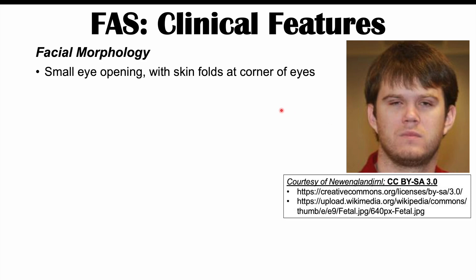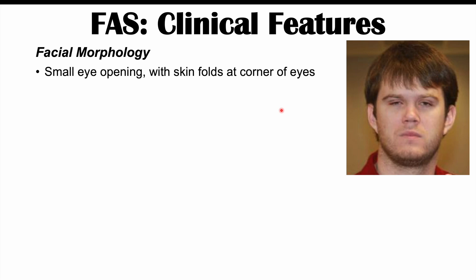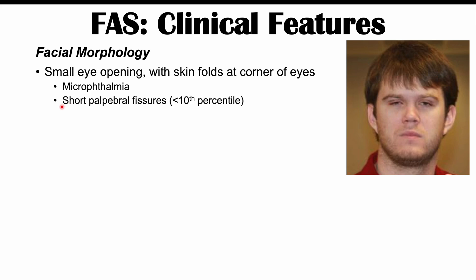Regarding facial morphology: patients often have small eye openings — microphthalmia — with skin folds at the corners of the eyes. They typically have short palpebral fissures less than the 10th percentile (palpebral fissures being the distance between the corners of the eyes), ptosis (drooping of an eyelid on one or both sides), and strabismus, where one eye is not properly aligned, causing vision issues.